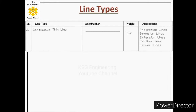Next, we will talk about the continuous thin line. Its construction is continuous and its weight is thin — no break from start to end, but with thin thickness. This line type is used for different purposes: projection lines, dimension lines, extension lines, section lines, and leader lines. Whenever we have to draw such lines, we must always use continuous thin line.